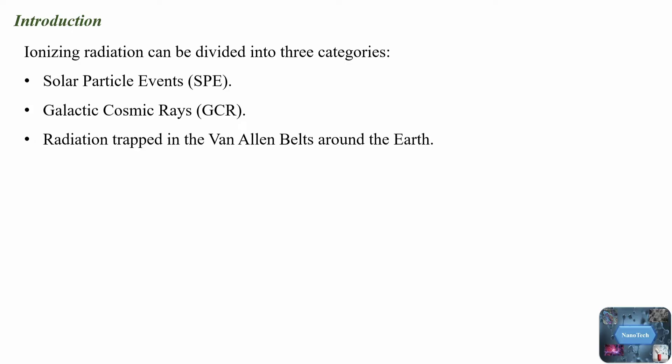Solar particle events occur when protons emitted by the sun become accelerated either close to the sun during a flare or in interplanetary space by coronal mass ejection shocks.